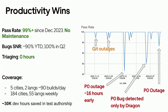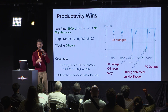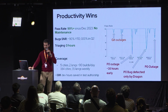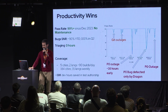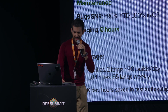In terms of productivity, the pass rate is 99% with no maintenance since December last year. Occasionally something dips, but it's infrastructure failures we can't control, or it's real bad situations — like a P0 outage we detected 16 hours before everyone else at Uber. One high-priority bug we detected before anyone else; we were the only ones who caught it. The signal-to-noise ratio is 90% year to date, and since Q2 it's 100% — we haven't filed duplicate tickets or made mistakes.